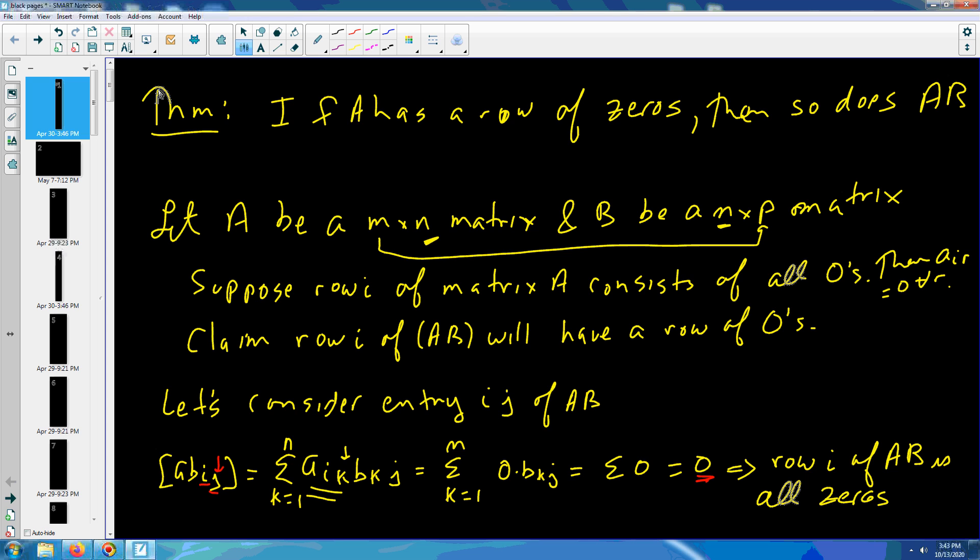Row i of AB is all zeros. Whether j was column 1 or column 2 or column 3, it was in row i. Row i column 1, row i column 2, row i column 3, no matter what j is, we got that zero. That completes the proof.